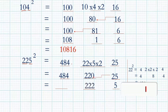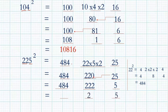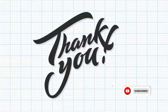Write down 0 from 220 and carry 22 forward to the next — that is 484 plus 22, which is 506. So the answer is 50625. Simple way — you should practice more, then you can do much faster. So practice well, thank you.